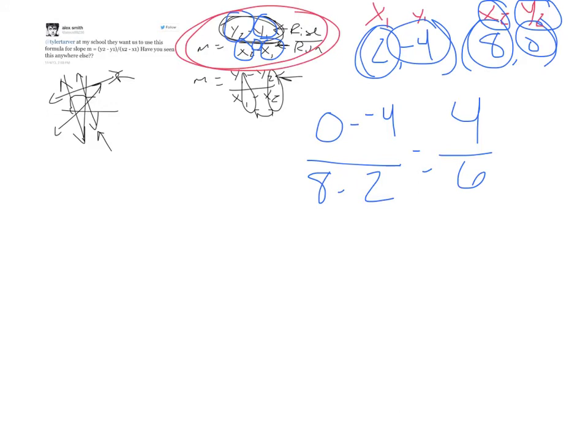Now, can this be simplified any? Of course. We know that since they're both even numbers, 2 goes into both of them. So I can divide the top by 2, which would be 2, and the bottom by 2, which would be 3. And now, our slope is 2 over 3.